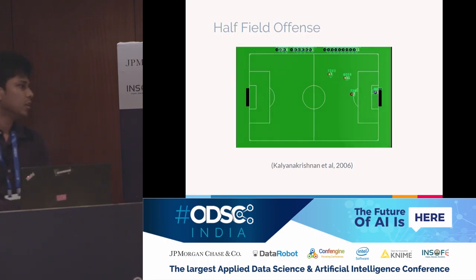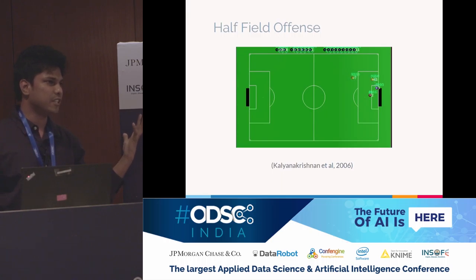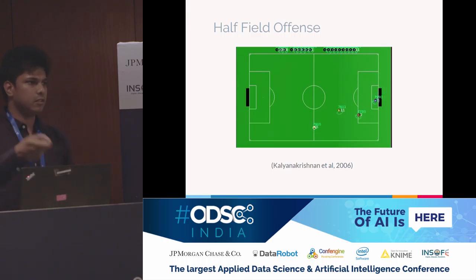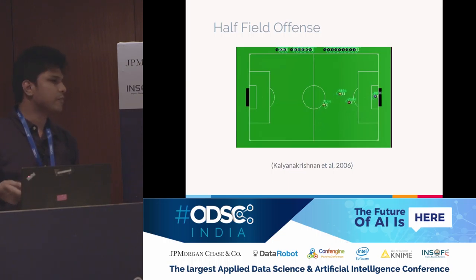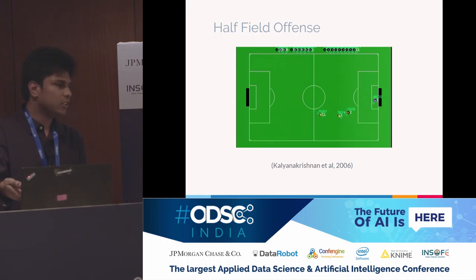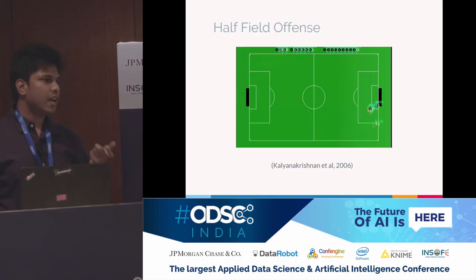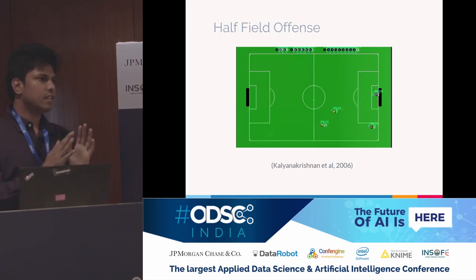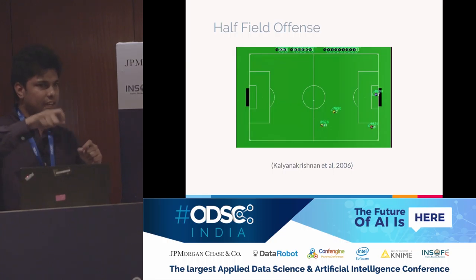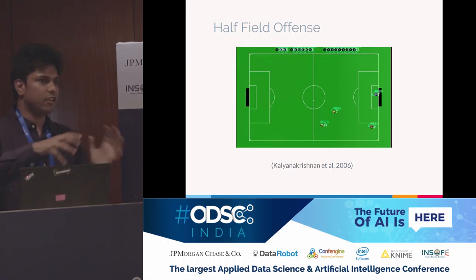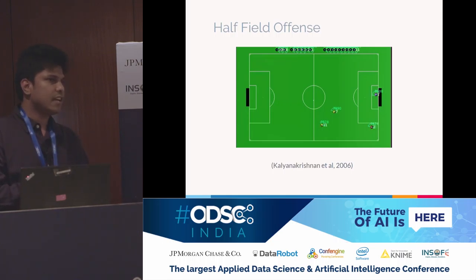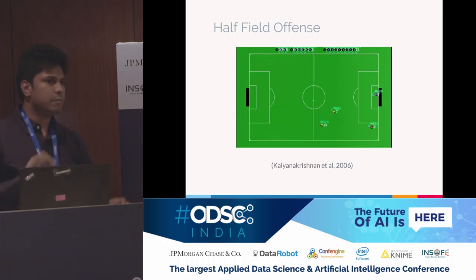Another example: a game of 2v2 soccer in a simulated environment. The states are hand-crafted features — positions of all other players, angles to all other players, their velocities. Actions can be: pass to this player, go to this position, shoot towards the goal. The reward is plus 1 if you manage to score a goal, otherwise nothing.